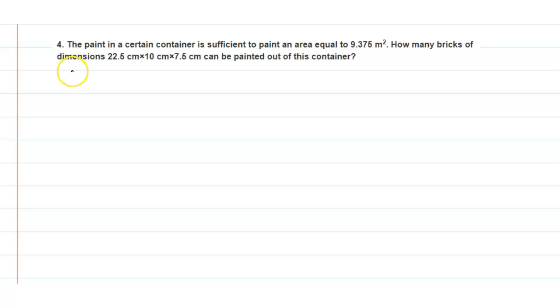Hello everyone, welcome back to my channel. Today's question is: the paint in a certain container is sufficient to paint an area equal to 9.375 meter square. How many bricks of dimension 22.5 centimeter into 10 centimeter into 7.5 centimeter can be painted out of this container?